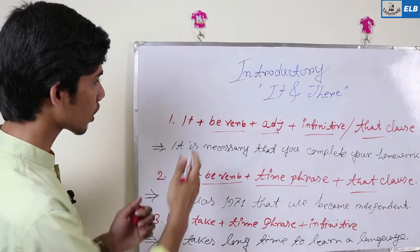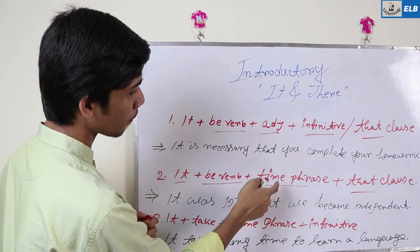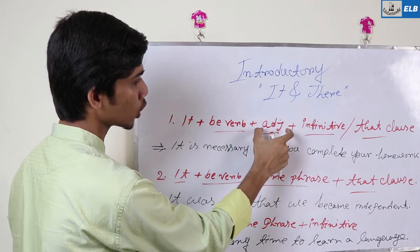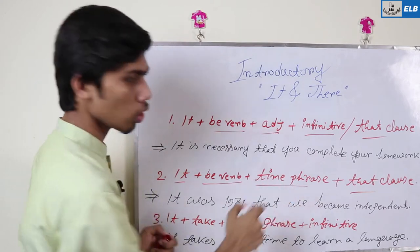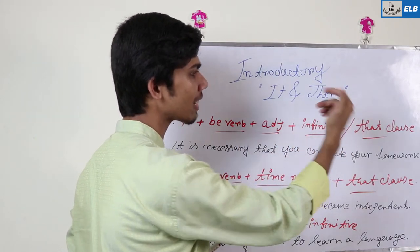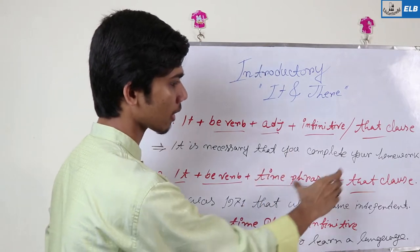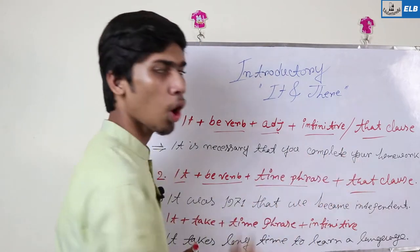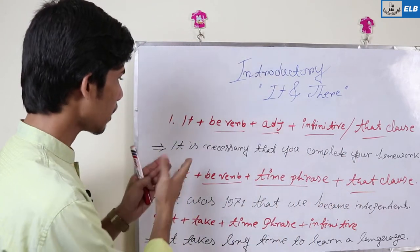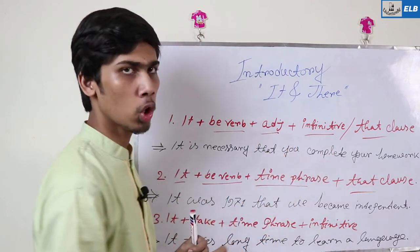There are two rules. First: it + be-verb + adjective + infinitive or that clause. Second: it + be-verb + adjective + time phrase. In the first rule, what follows the adjective is an infinitive or that clause; in the second rule, it is a time phrase.